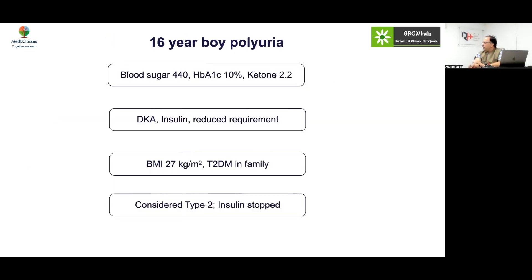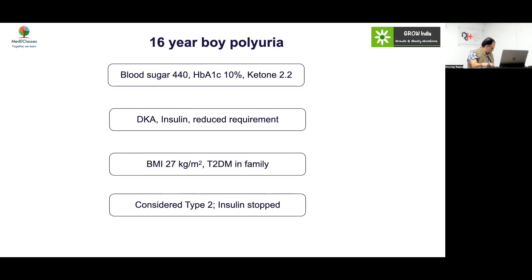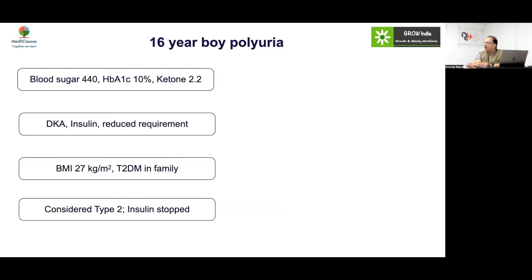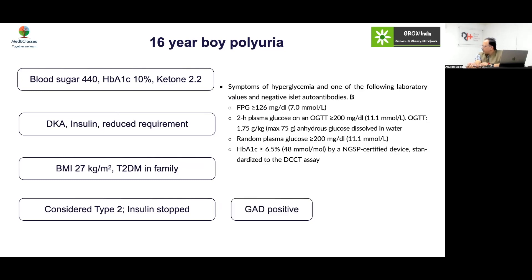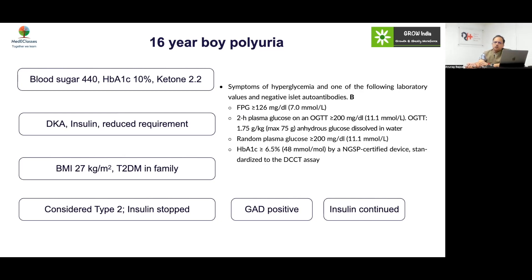Case 2: A 16-year-old boy with polyuria, very high sugars, HbA1c 10%, ketosis present. DKA occurred, insulin was started, then requirement came down. He was overweight/obese with a family history of type 2 diabetes, so insulin was stopped and metformin was started. Do you agree? No — before labelling anyone type 2, you should do a GAD antibody. Per SPAD guidelines, the GAD antibody was positive and insulin should have been continued. Do not label anyone as type 2 without excluding autoimmunity.